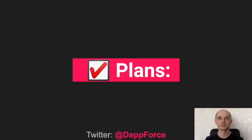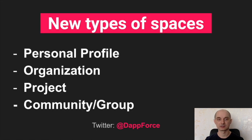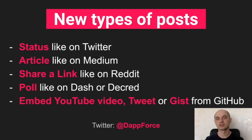Now let's consider our future plans. At SubSocial we plan to create Spaces — a mix of blog, personal profile, and organization — a space on a blockchain where owners or others can post statuses or articles. It should be possible to be co-owners of a space. We want to introduce new types of spaces such as personal profiles, organizations, projects, startups, and community groups. We also plan new post types like statuses similar to Twitter, articles like Medium, link sharing like Reddit, polls like Dash Central or Decred, and the ability to embed YouTube videos, tweets, and GitHub gist files.